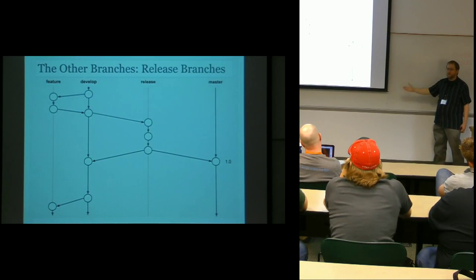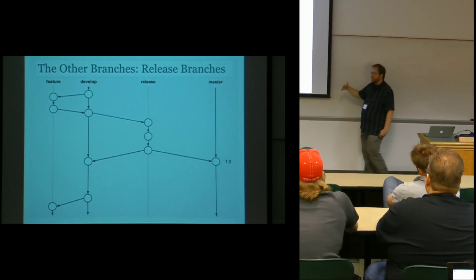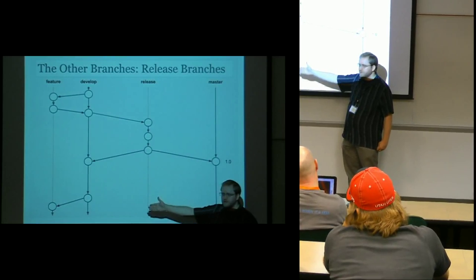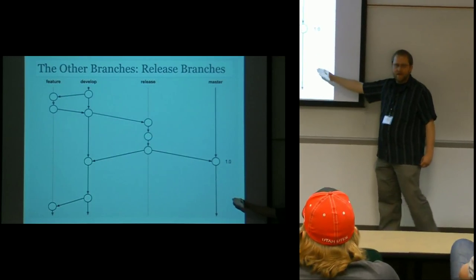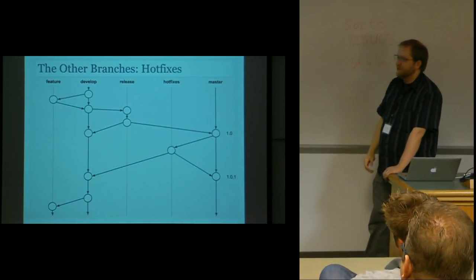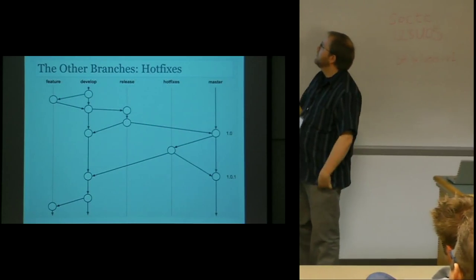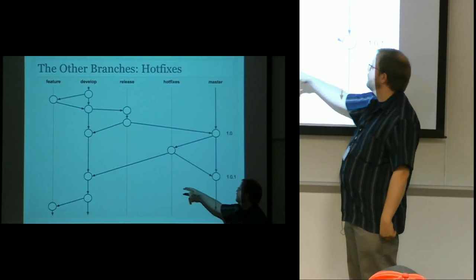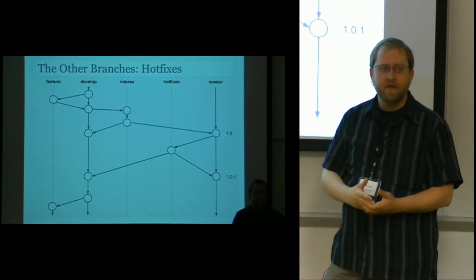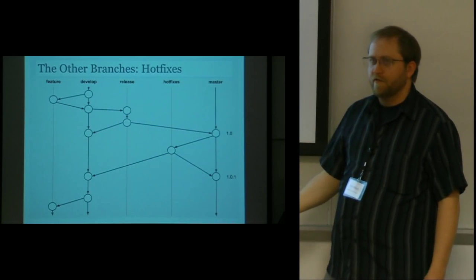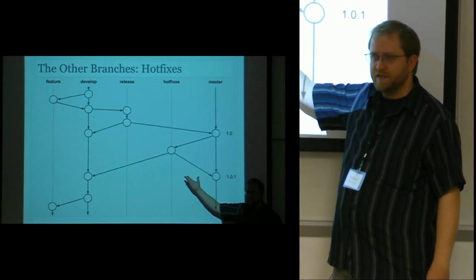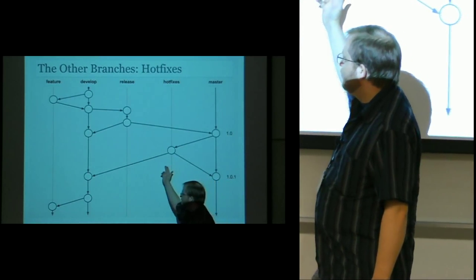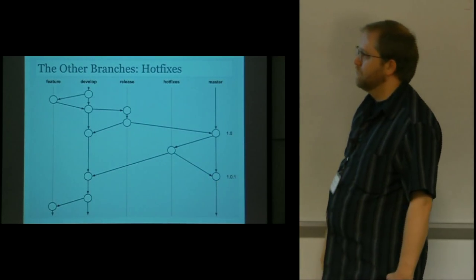Now master is established with code — anybody who checks out the master branch, we're very confident this is good, stable code. It might be a little out of date as development continues on the develop branch, but it's older and stable. When something breaks on master, we need to issue a hotfix. We establish a new branch, but this time we pull from master — not from develop — because it's a problem on that code. We make the fix, push it back to master with a new tag, and that change also needs to go back to the development branch. The process continues.